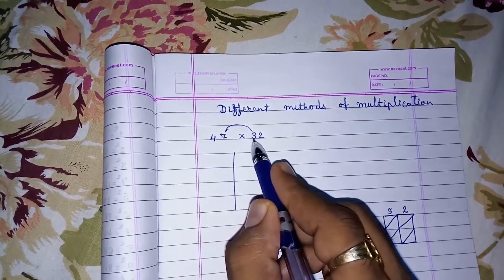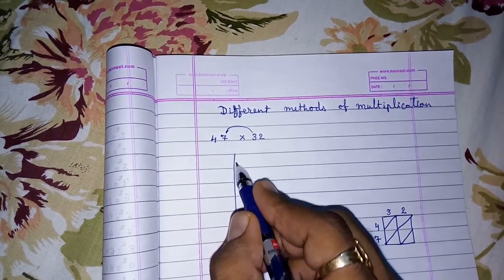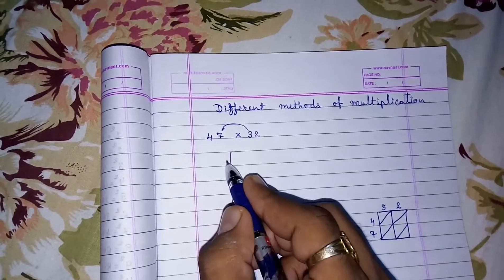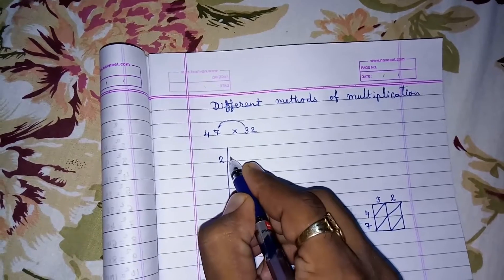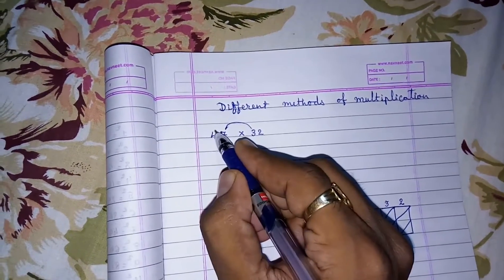7 into 3. Then we have to draw a line like this and we have to write the first number, 7 into 3, 21: 2 on this side, 1 on the other side.